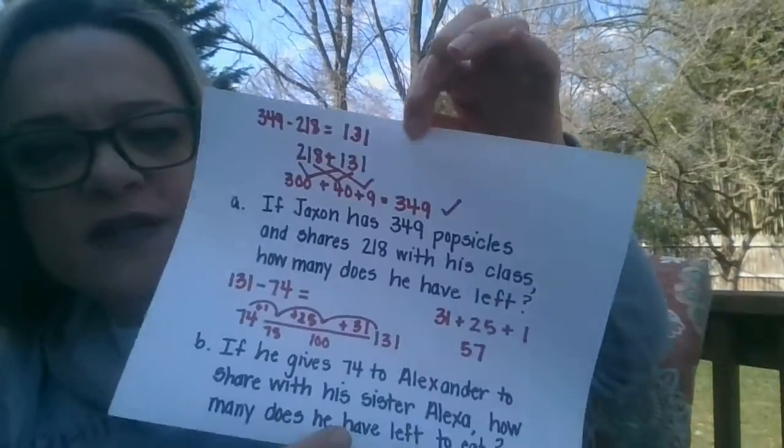If Jackson has 349 popsicles and shares 218 with his class, how many does he have left? If he gives 74 to Alexander to share with his sister Alexa, how many does he have left to eat? All right, so I have for you the solutions.